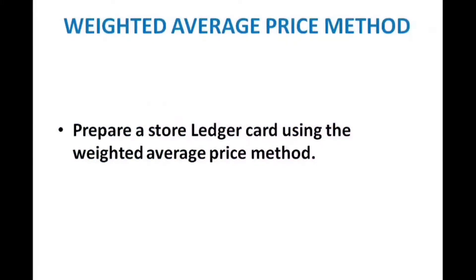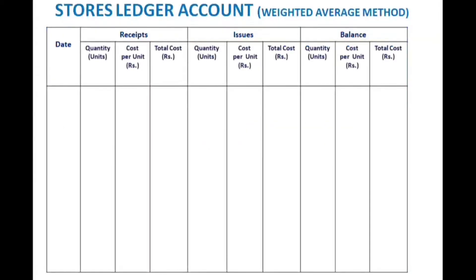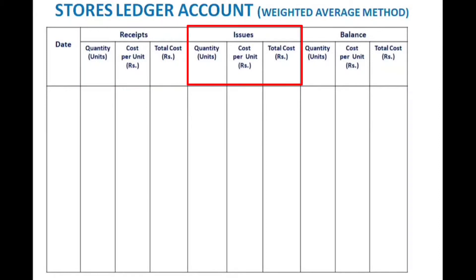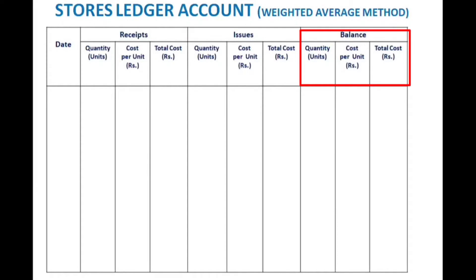We will prepare the stores ledger account using the weighted average method. The ledger has columns for Date, Receipts, Issues, and Balance. Receipts includes: quantity, cost per unit, and total cost. Issues includes: quantity, cost per unit, and total cost. Balance also includes: quantity, cost per unit, and total cost.